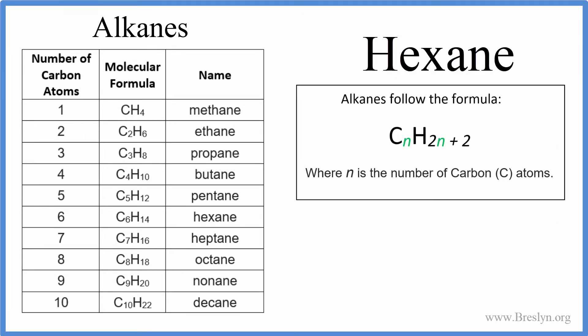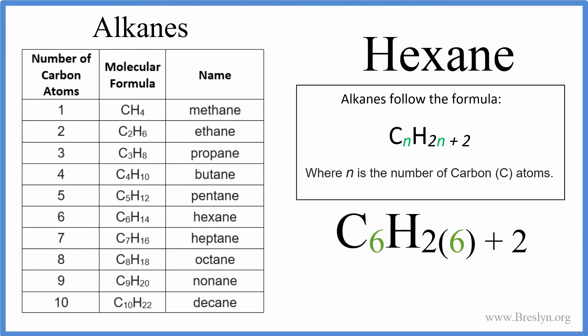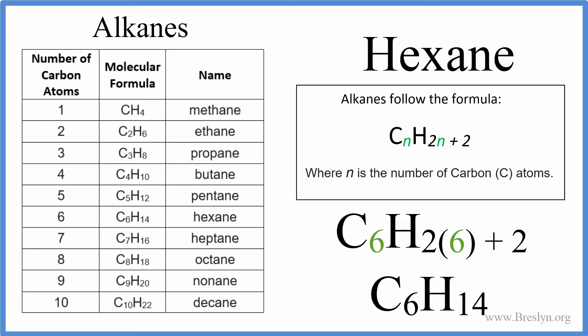If we want to write the chemical formula for hexane, we can use this mathematical formula here, where n is the number of carbons. So we said hexane has six carbons: C times six, then we have H 2 times six plus two. And that'll give us the formula for hexane — that's C6H14.